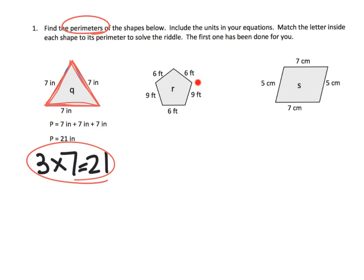For example, we've got this pentagon here, and I can see that we've got a 6, a 6, a 6, and we've got a 9 and a 9. Now we could add all five of those numbers up, but we could also do something like 3 times 6 plus 2 times 9, and we could get 18 plus 18, which is equal to 36 feet in this case.